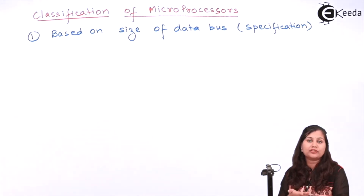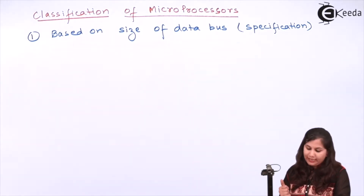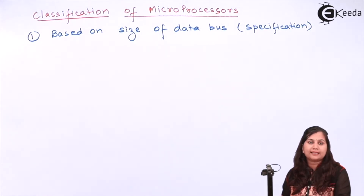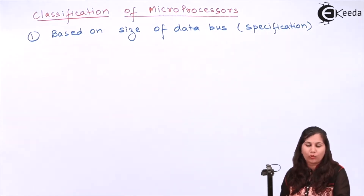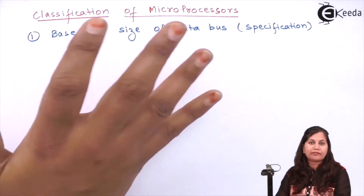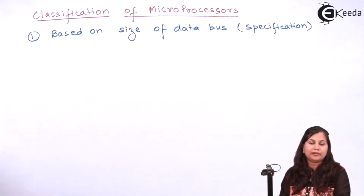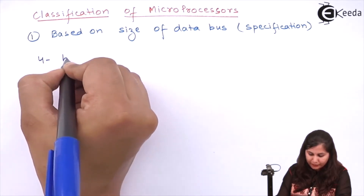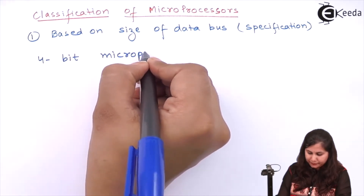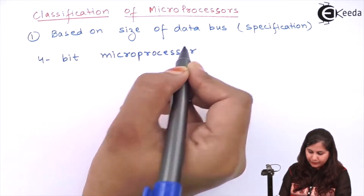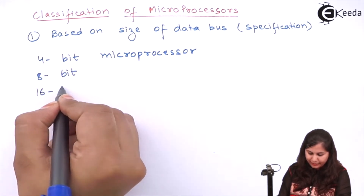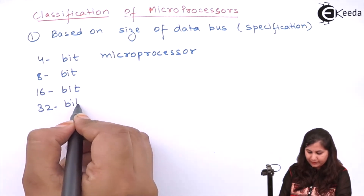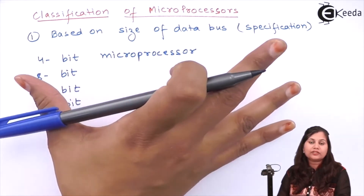The size of the data bus is very important because it determines how much data the microprocessor is getting as input. The data given to the microprocessor is in the form of binary numbers — 0 and 1. The size of the data bus defines how much data the microprocessor can handle. On this basis, microprocessors are classified as 4-bit, 8-bit, 16-bit, or 32-bit microprocessors.